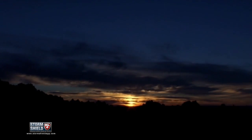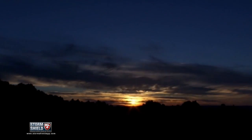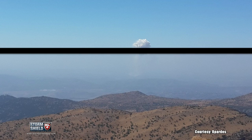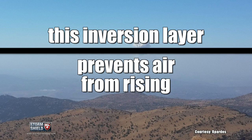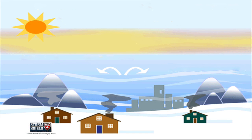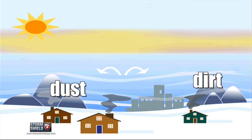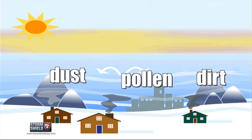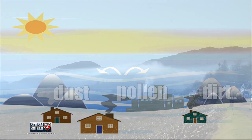When an inversion is in place, it does a couple of things. It can prevent thunderstorms from forming by preventing convection, or air from rising. It also traps pollutants like dust, dirt, and pollen in the lower levels of the atmosphere, because air at the surface can't rise up and mix with the air higher up.